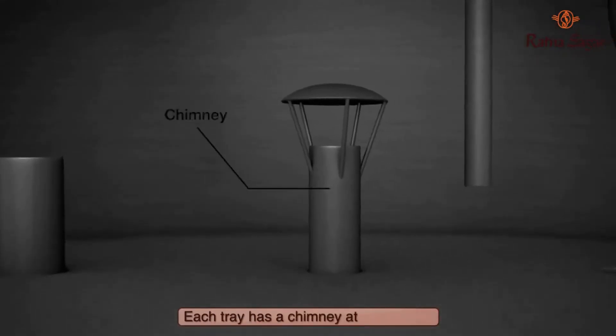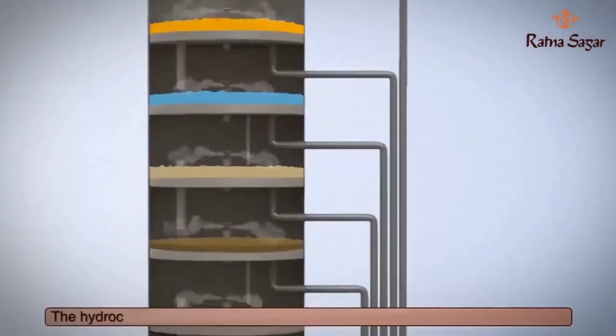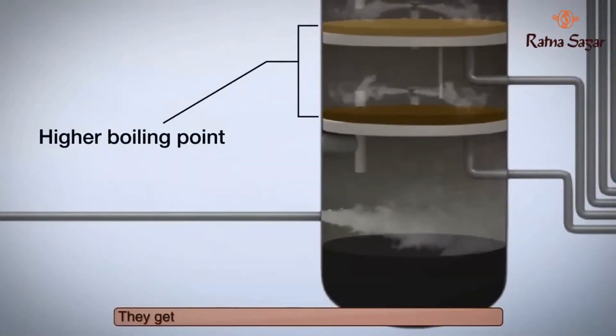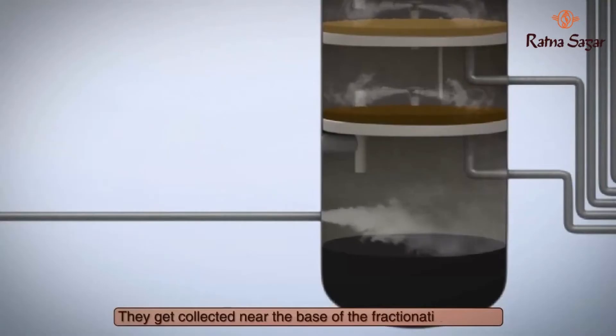Each tray has a chimney attached to it. The hydrocarbons with the higher boiling points condense first in the lower trays. They get collected near the base of the fractionating tower.